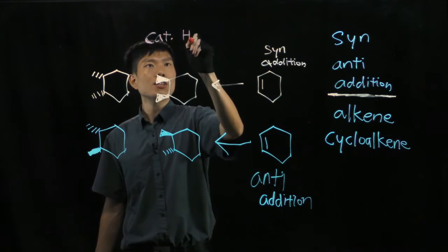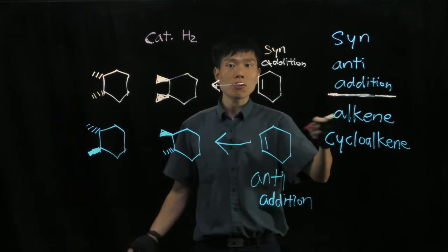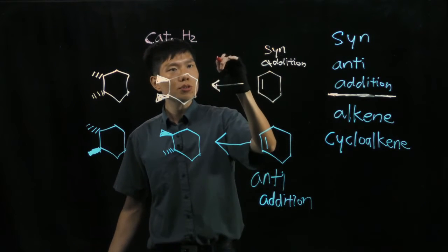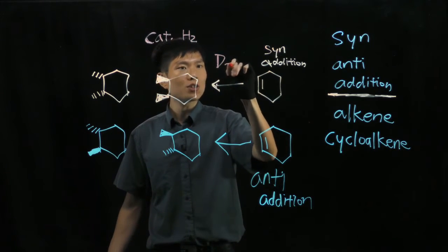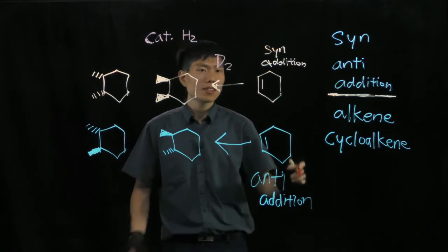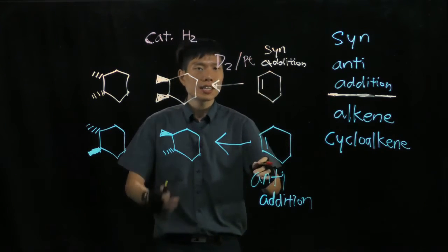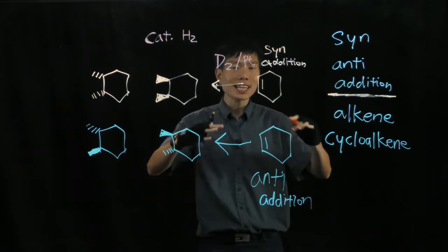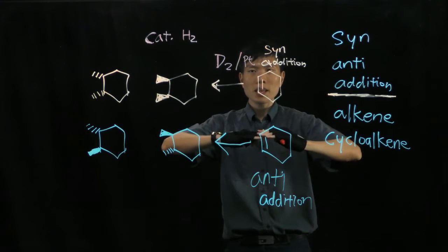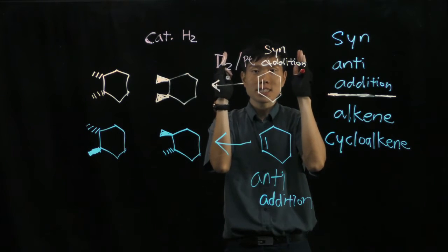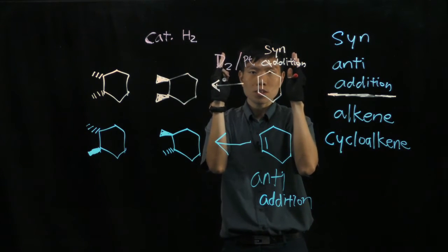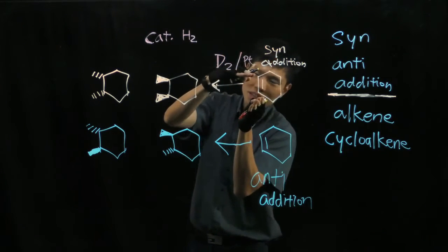Catalytic hydrogenation of alkene to form alkane. So now let me just use deuterium, which is an isotope of hydrogen, in the presence of platinum. Now because we are using this heterogeneous catalyst, a solid platform and the deuterium are facing the same side. That means these two deuterium could add to the double bond from the same side.